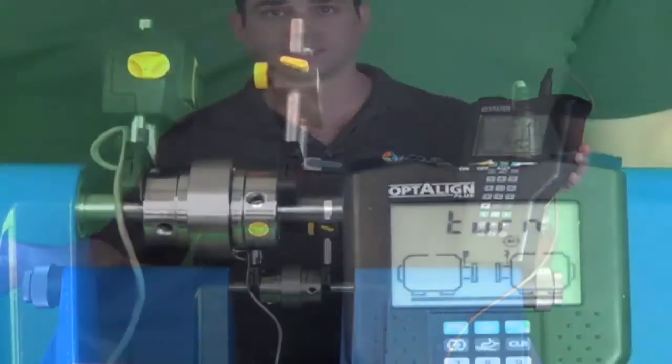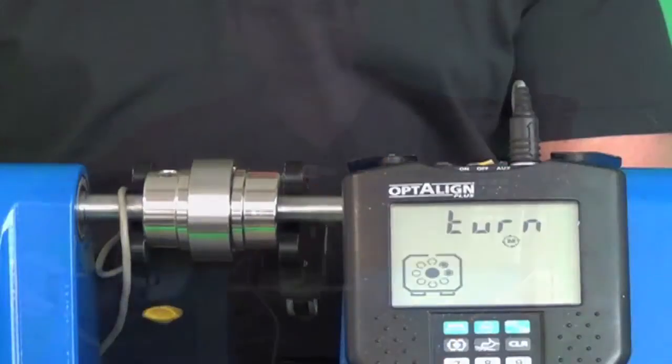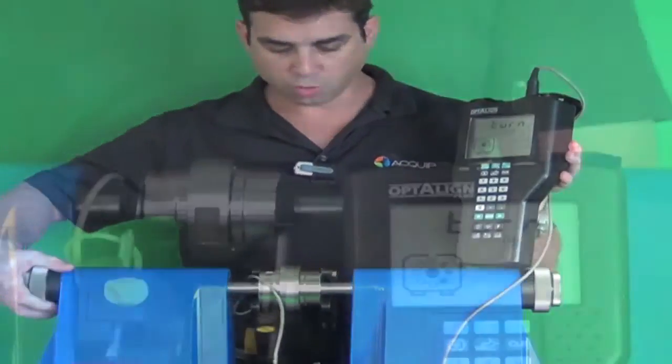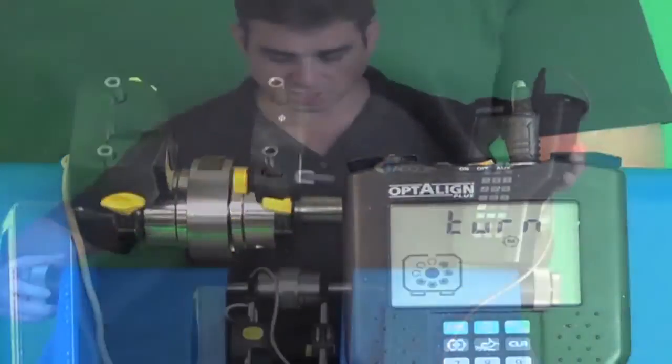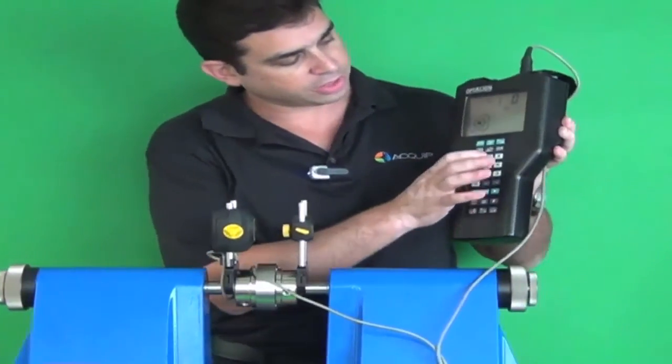We make sure that we're set to zero and we go ahead and rotate the shafts to take readings. We turn the shafts 360 degrees and then we look at our results.